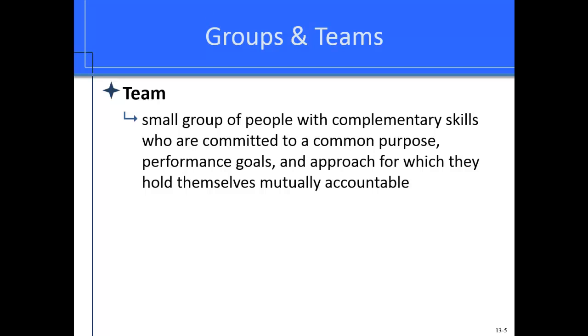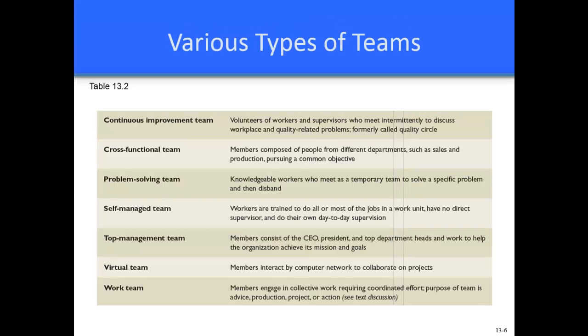Teams are defined as a small group of people with complementary skills who are committed to a common purpose, performance goals, and an approach for which they hold themselves mutually accountable. As you can see in table 13.2, there are several different types of teams, including continuous improvement and cross-functional teams. Cross-functional teams are composed of people from different departments — such as human resources, production, material handling, and shipping — all coming together for a common objective, like increasing the efficiency of a production line, bringing different perspectives to accomplish that common goal.